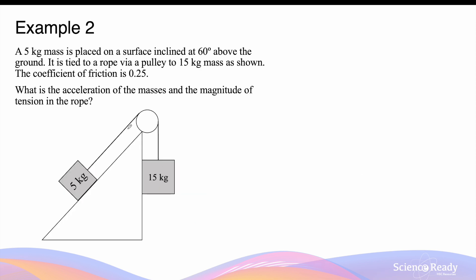Now let's look at an example where there's friction between the surface and the mass. We have a 5kg mass resting on the surface inclined at an angle of 60 degrees. It is tied to a rope by a pulley to a 15kg mass as shown, and the coefficient of friction is 0.25. Again, we want to find the acceleration of the masses and also the magnitude of tension in the rope.